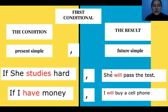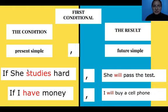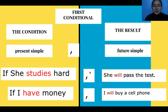Don't forget that. In First Conditional, in the condition, you always have to use 'if' and the sentence in simple present. Then, when you join the sentences, you have to put a comma. Then you write the sentence in future simple.